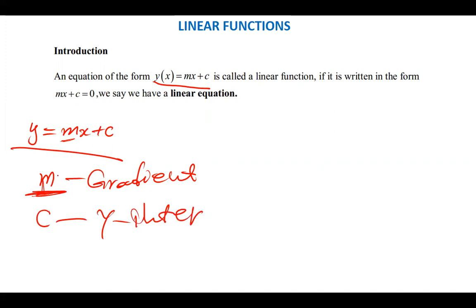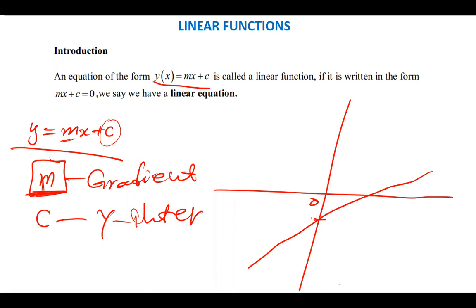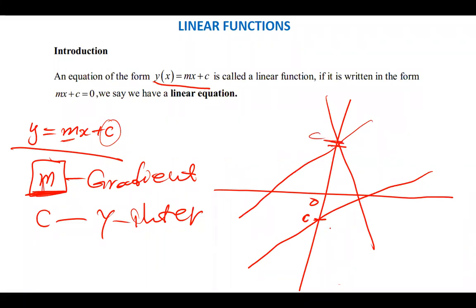The y-intercept c is the point where the line cuts the y-axis. For instance, on an xy-plane, if a line passes through the plane, the gradient — which is the slope — is represented by m, and c is the point at which the line cuts the y-axis. A positive c means the line crosses above the origin; a negative c means it crosses below.